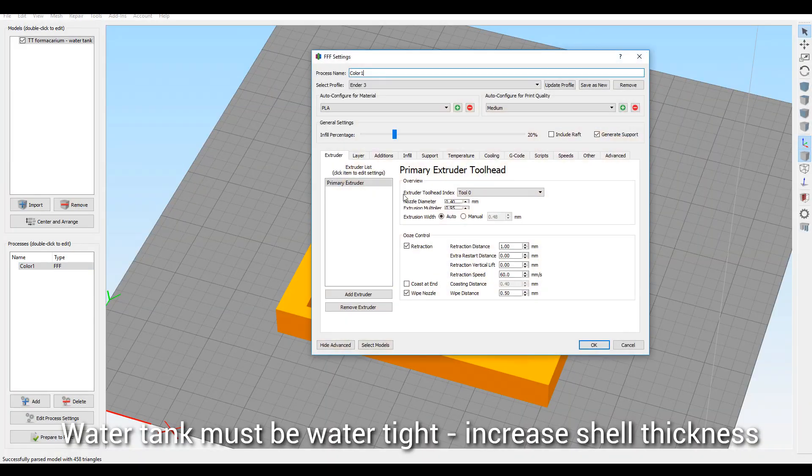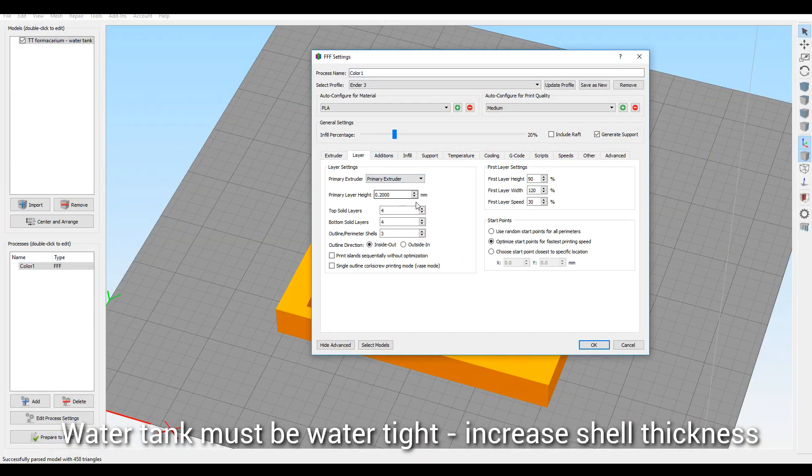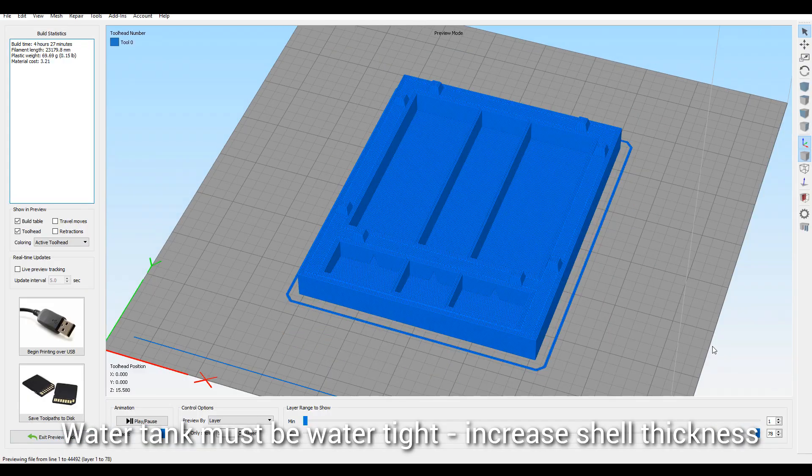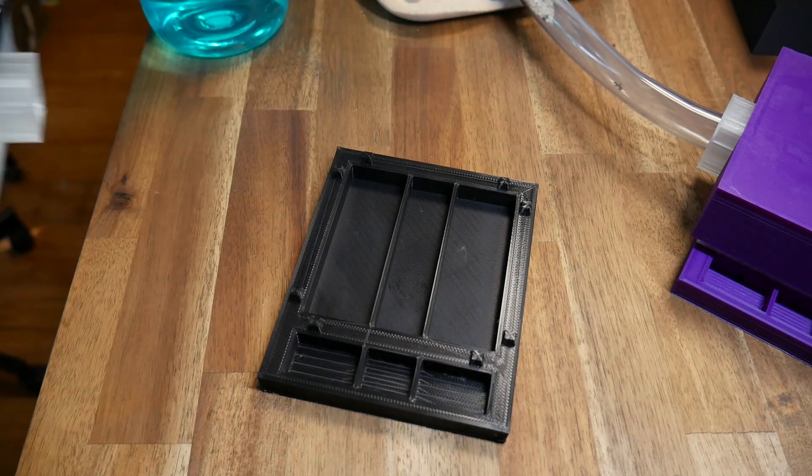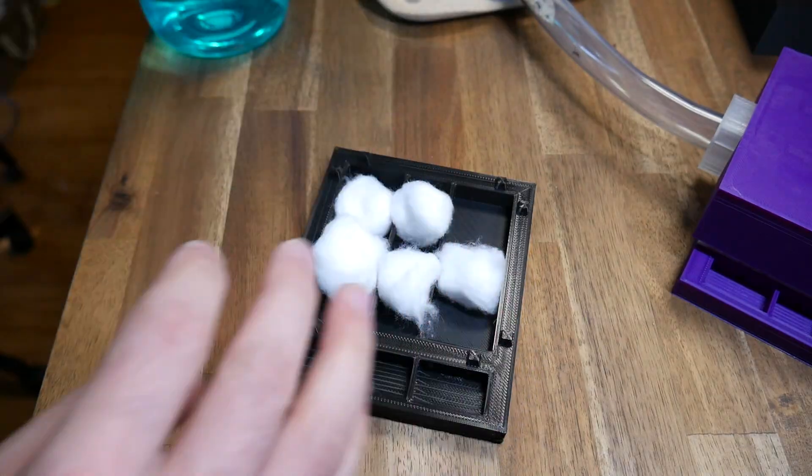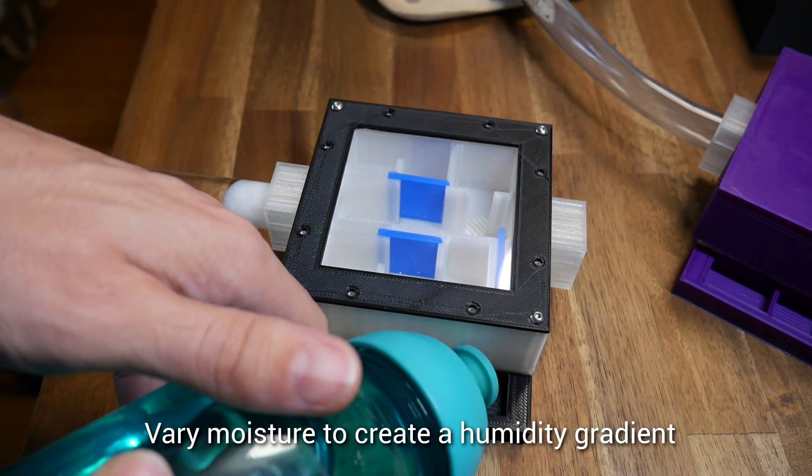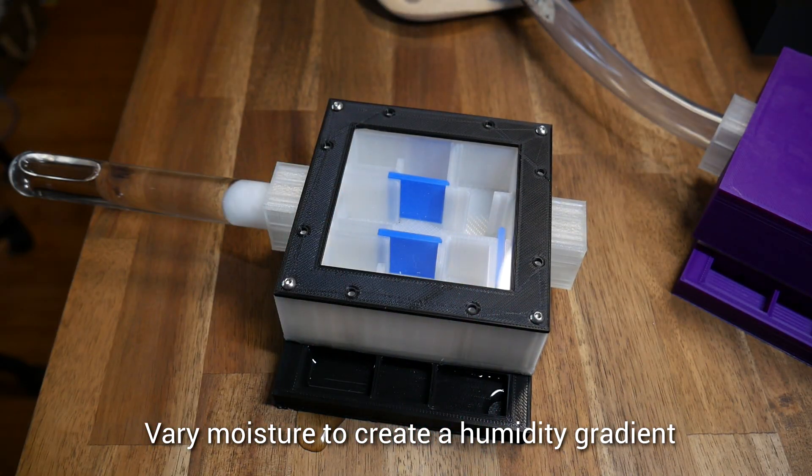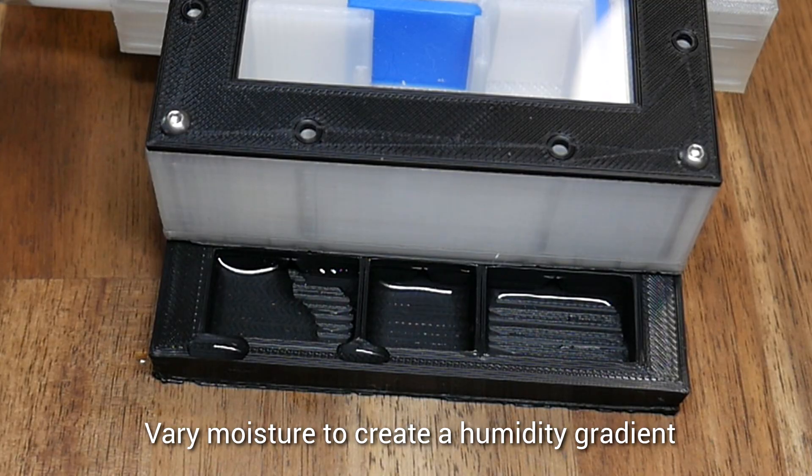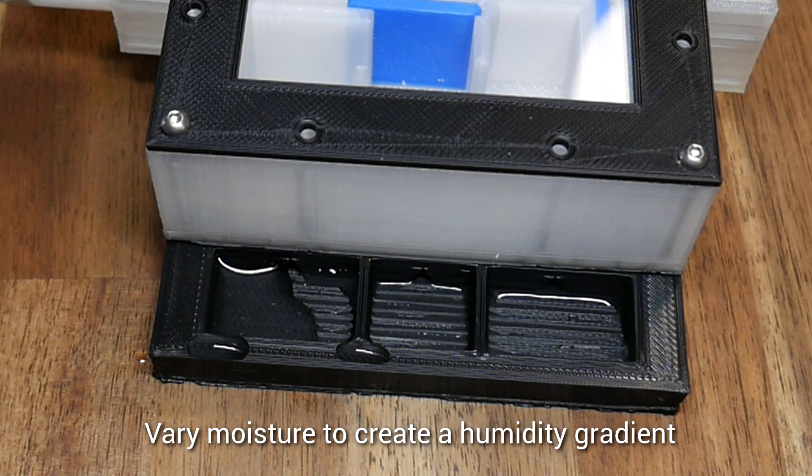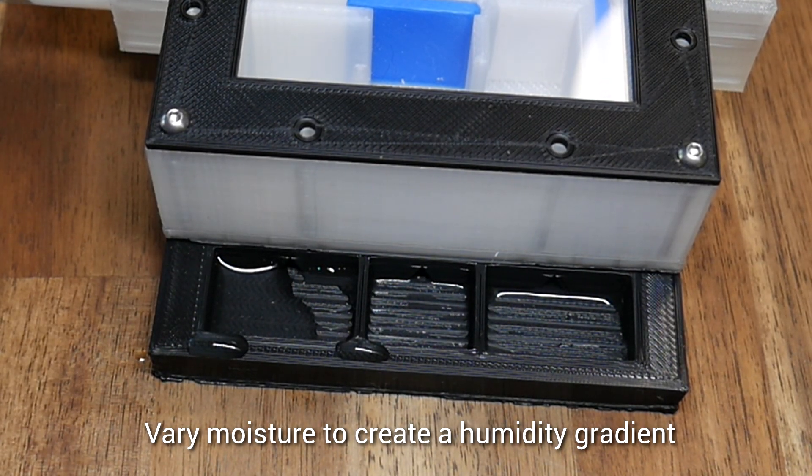The very bottom section which I call the water tank needs to literally be water tight therefore you might like to up the thickness or amount of outline or perimeter shells. This should minimize any chance of water leaking out. It sits at the bottom and it's designed to be loaded up with cotton wool balls. The little tray that sits out the side is to add water to and you can do this while the whole thing is assembled. The water should seep through the little hole and be soaked up by the cotton wool balls. There's three chambers so you can vary the amount of humidity from left to right the idea being to create a gradient so the ants can seek out their most favorable conditions.